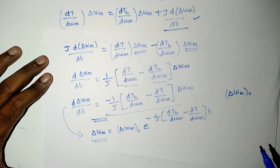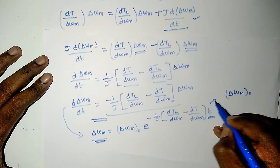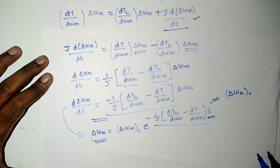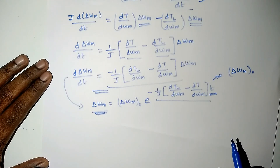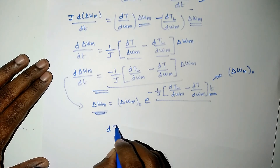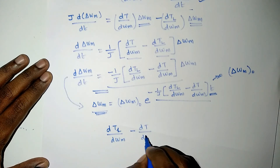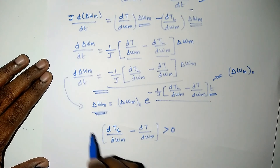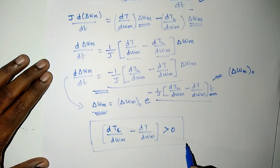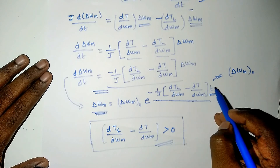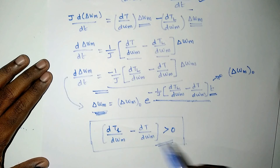The equilibrium point will be stable when delta_omega_m approaches 0 as time tends to infinity. For this to happen, the exponential term must be negative. Therefore, the condition for steady state stability is: dTL/d omega_m - dT/d omega_m > 0. If this condition is satisfied, the exponential term will be negative, and when t approaches infinity, delta_omega_m will become 0.